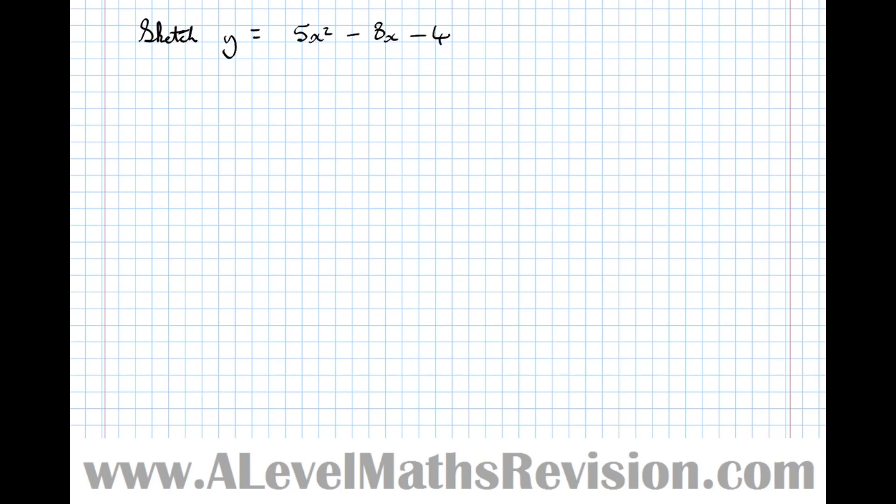Let's try another. This one's asking us to sketch y = 5x² - 8x - 4. So the first thing we're going to look for are the x-intercepts or the roots as they're quite often called. y = 0 is where the roots or x-intercepts occur, which means we're solving 5x² - 8x - 4 = 0.